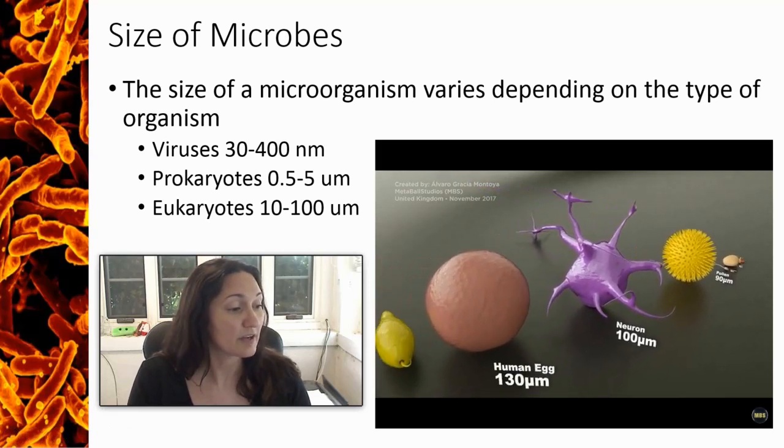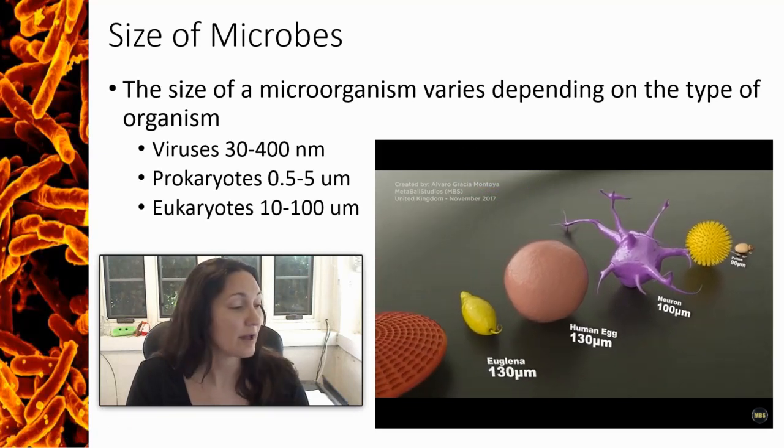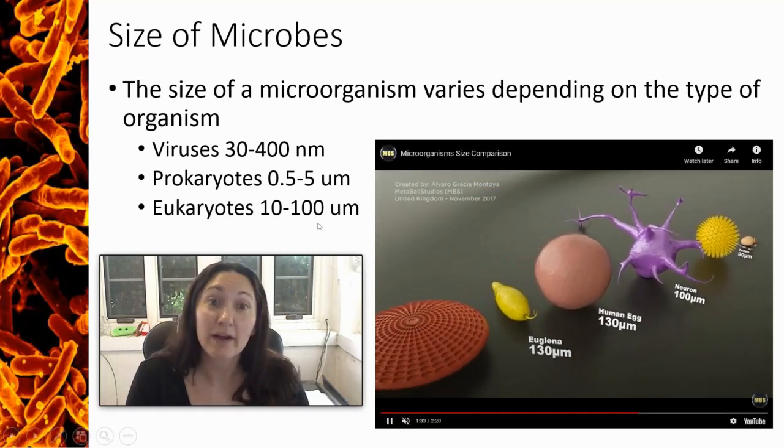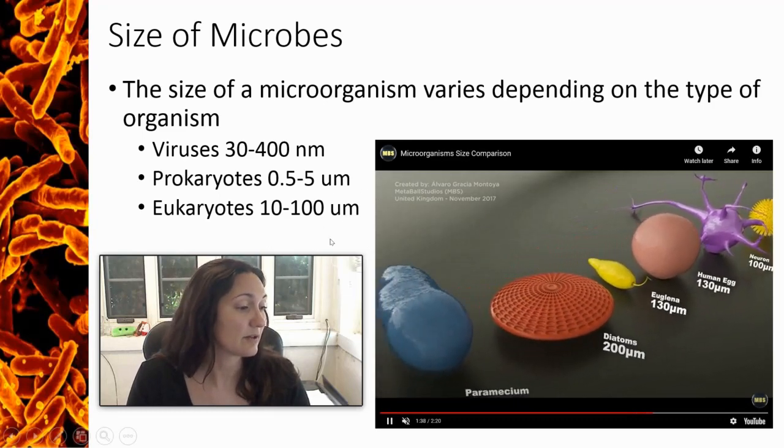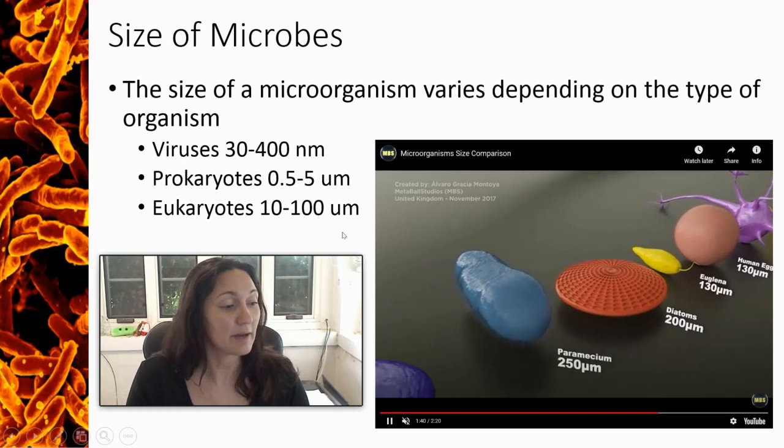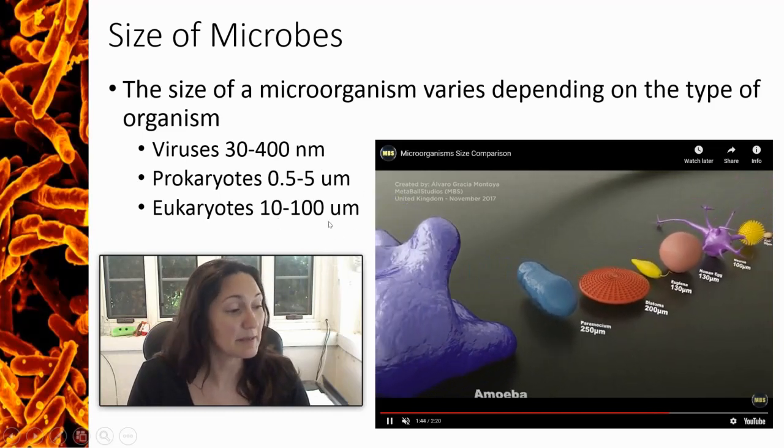We continue moving up, we see a human egg at about 130 micrometers, and then we move into some of the eukaryotic microbes: euglenas, diatoms, paramecium at about 250 micrometers, and this big guy is an amoeba.